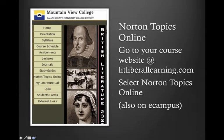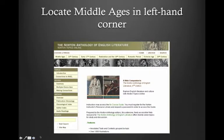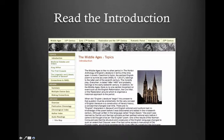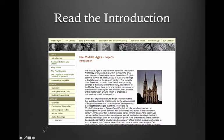You're going to go to Norton Topics Online, which is a button on your internet website at litliberallearning.com. It's also located on eCampus. After you've selected it, you're going to look at the top menu and choose Middle Ages — it's in the lower left-hand corner of the first page of the website. You click on Middle Ages and up will pop the introductory lecture or reading that you need to do. You can bookmark it on your computer so you can easily find it.